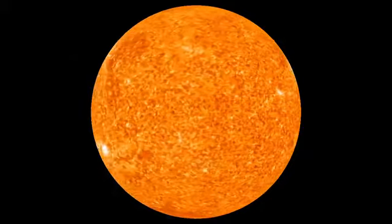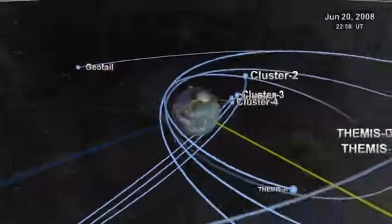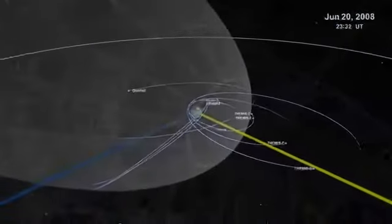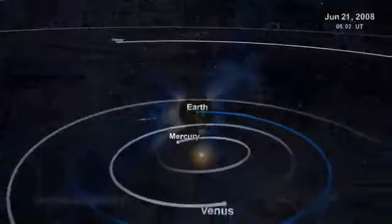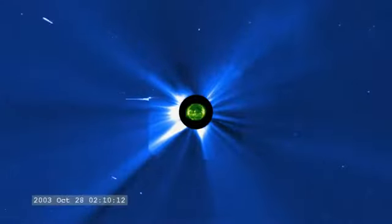The full view of the Sun from STEREO and SDO, coupled with the other spacecraft in NASA's heliophysics fleet, will help scientists understand our dynamic star and give us more time to prepare for the next big storm.